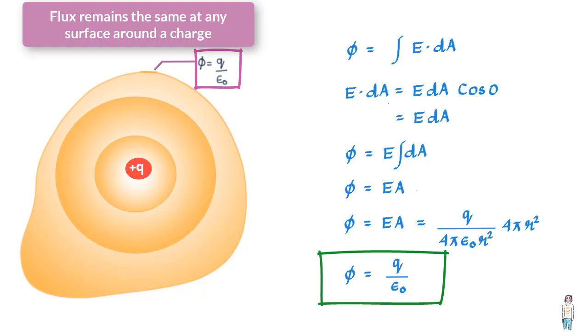I repeat, and this is a very important statement, so you've got to hear it a little closely: the flux value remains the same at the surface of any shape that may enclose a given charge.